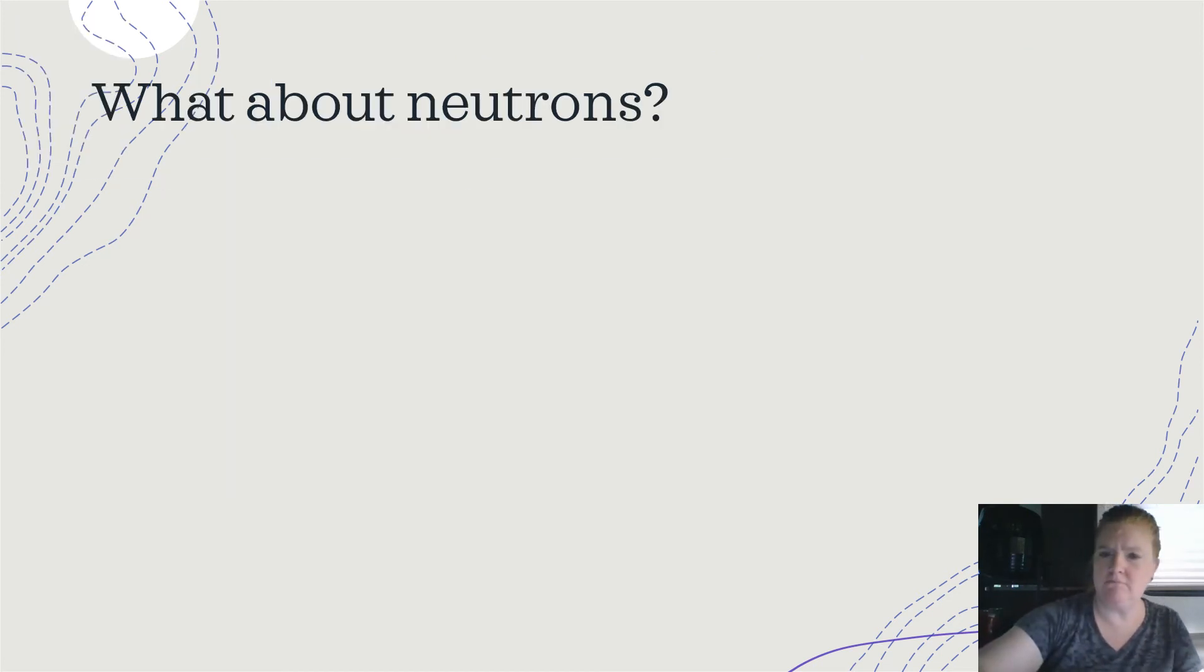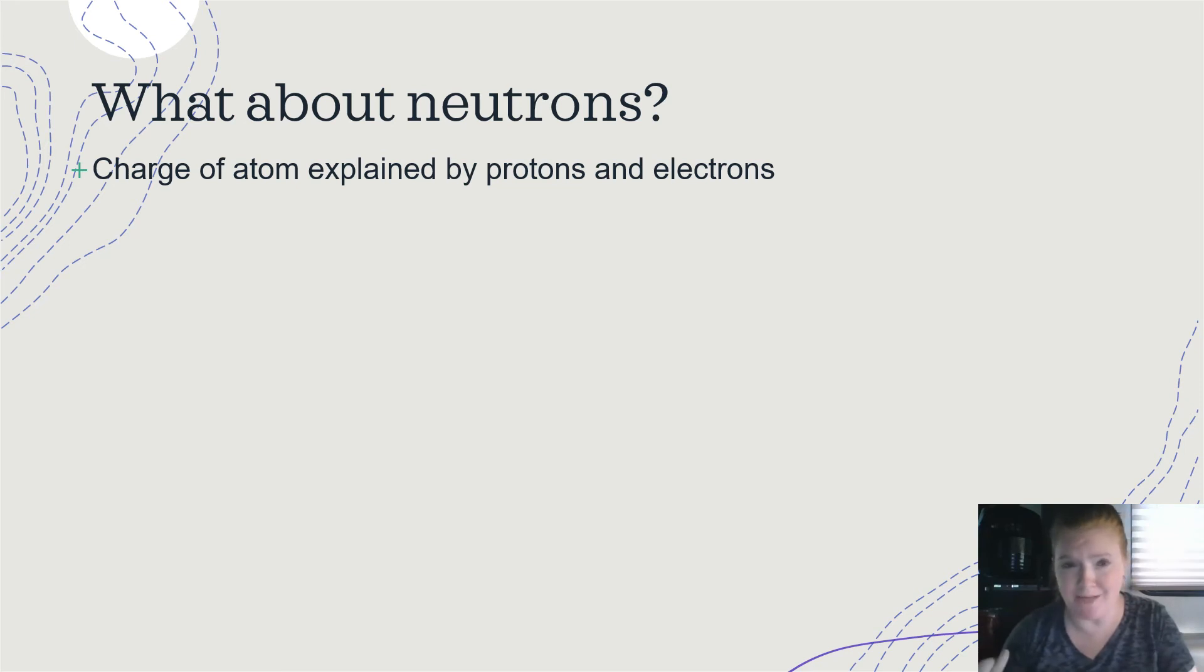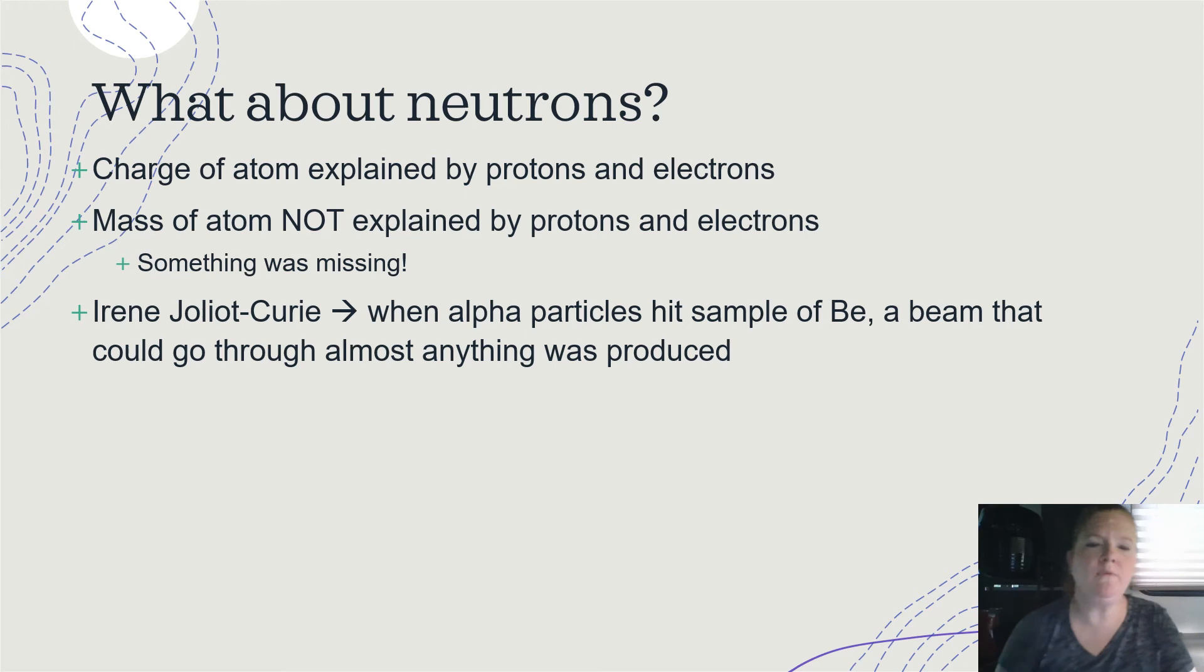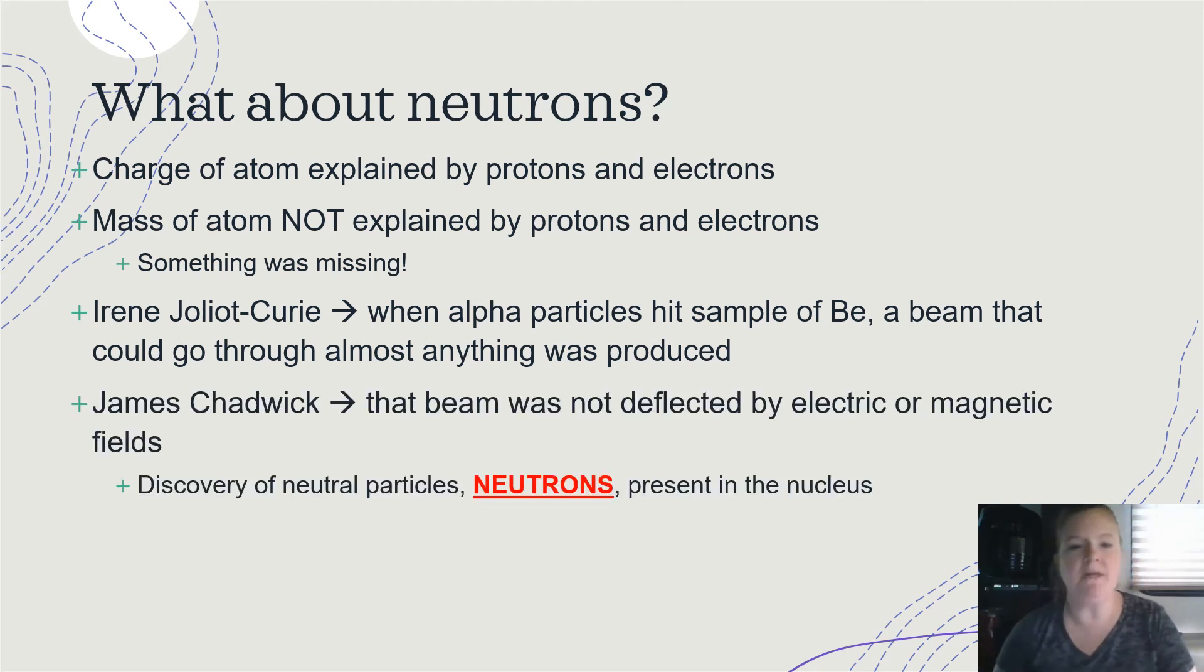What about neutrons? Okay, remember in the beginning, I said protons, neutrons, and electrons. Well, the charge of an atom explained protons and electrons. Perfect. But the mass of an atom was not explained by it, something was missing. So the electrons had very little mass, the protons had mass, when you added them together, they didn't equal the mass of the atom. So obviously, something was missing. Okay. So Irene Juliet Curie discovered that when alpha particles hit an atom of beryllium, a beam that could go through almost anything was produced. That was expanded on by James Chadwick, and that beam that was not deflected, that beam was not deflected by electric or magnetic fields, which means it didn't have a charge. Hence, neutrons. So it was the discovery of neutral particles, neutrons, present in the nucleus.